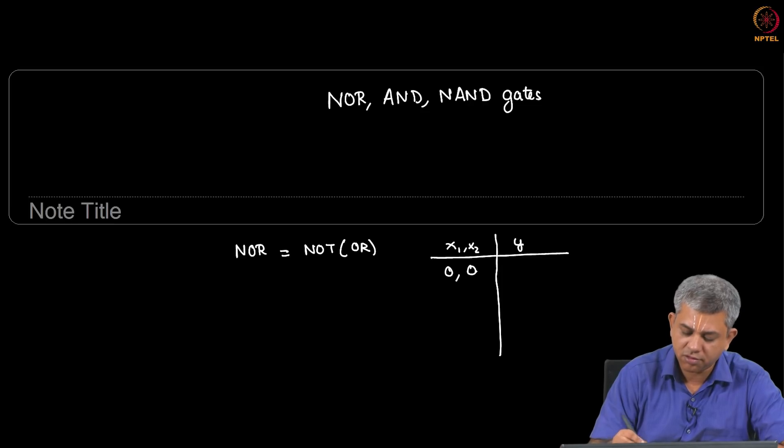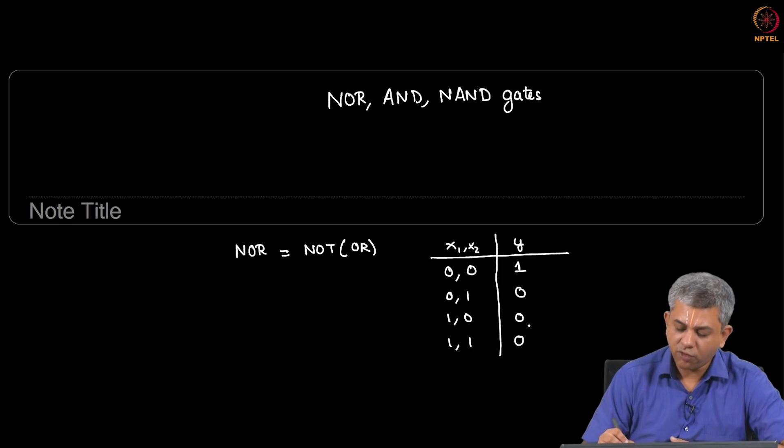If you have 00, 01, 10, 11, it is exactly the opposite of OR. How would we make weights for this? I will let you work through the algebra.